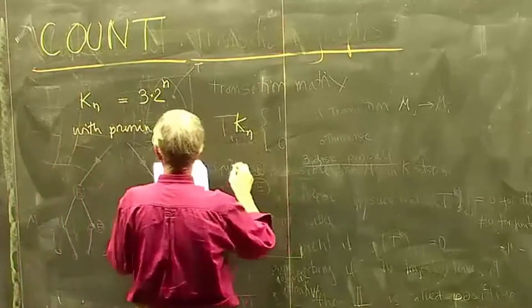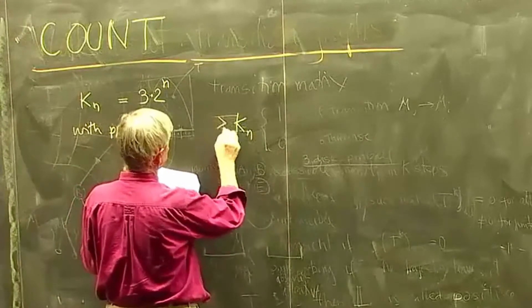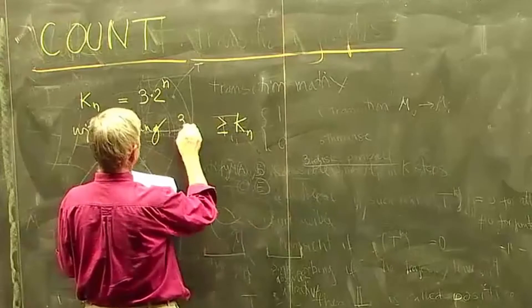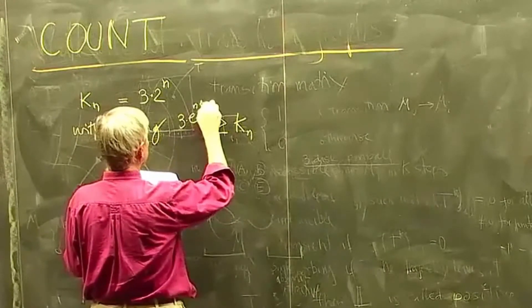Kn, the number of trajectories, will be smaller, or maybe equal but probably smaller, as 3 times e^(n log 2).